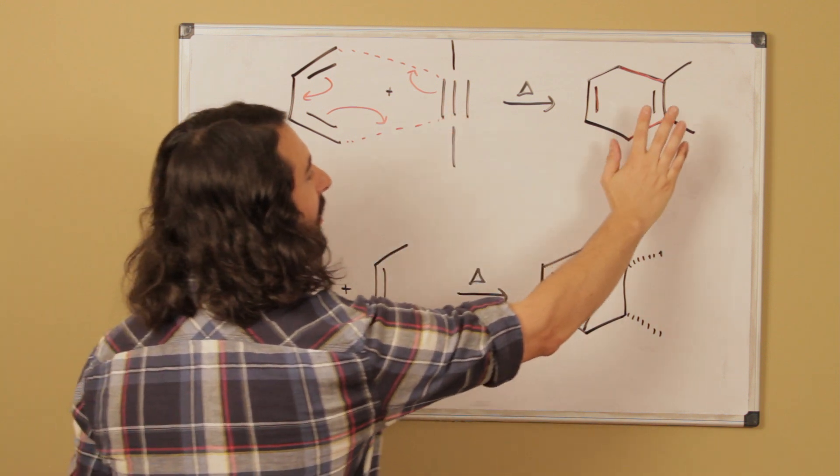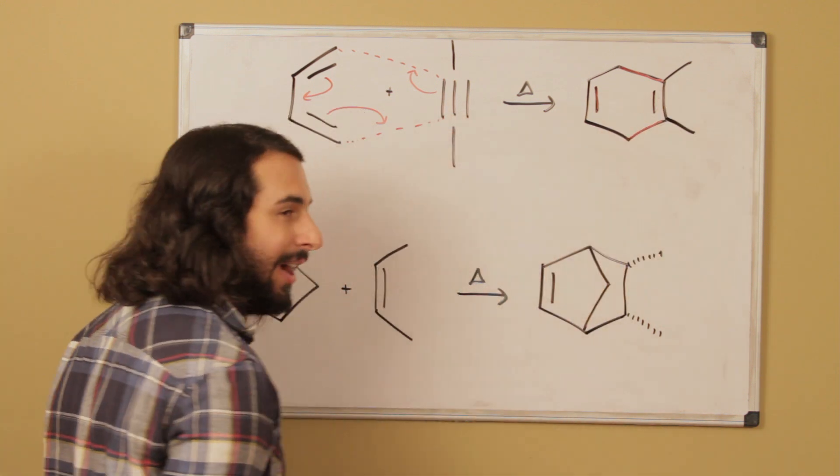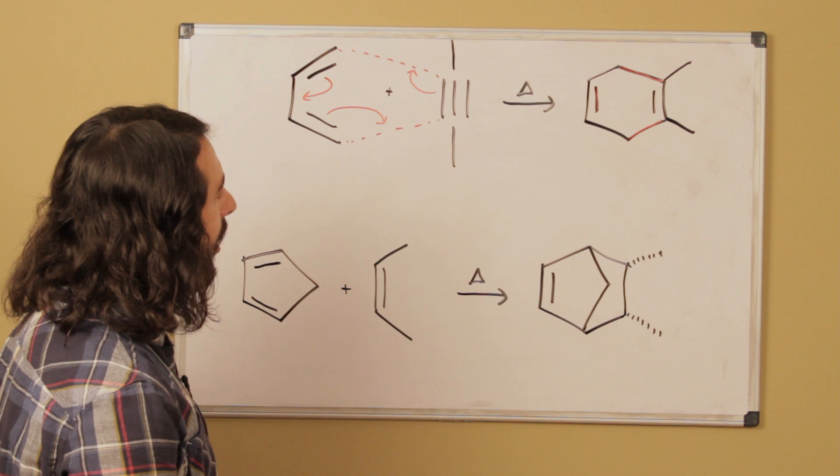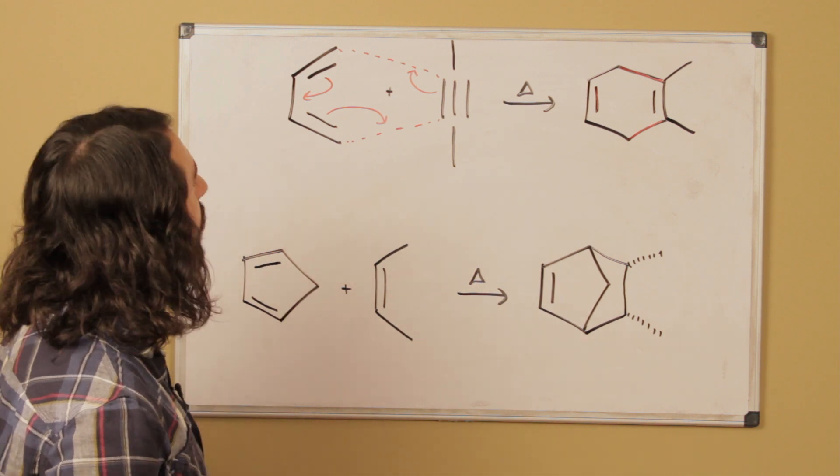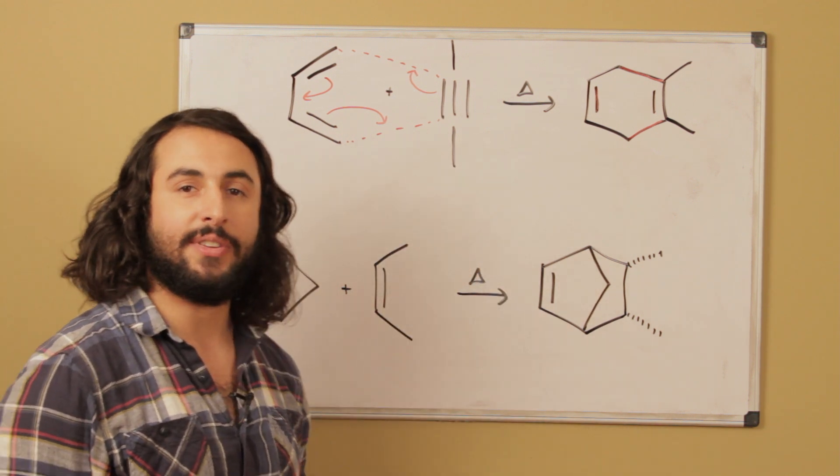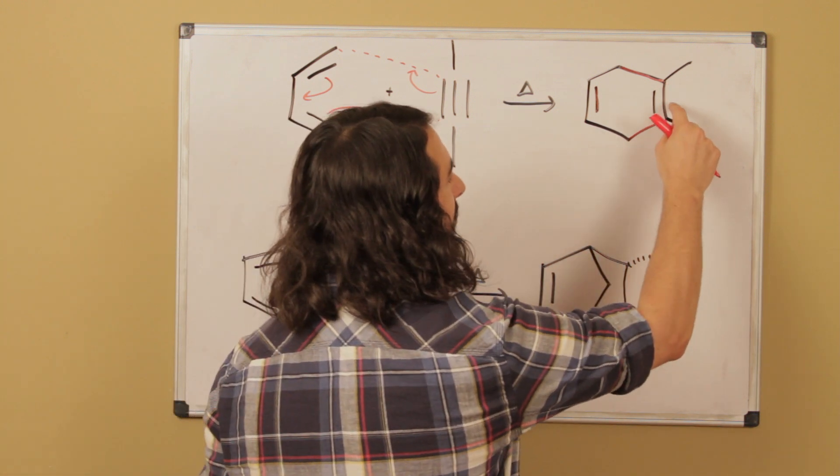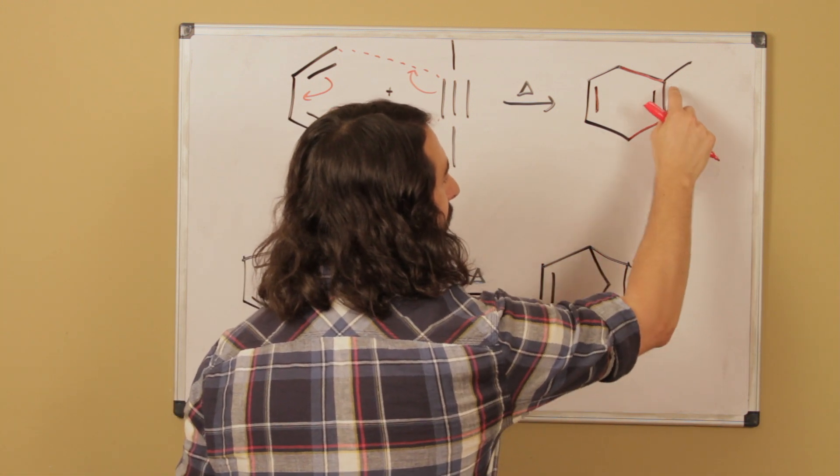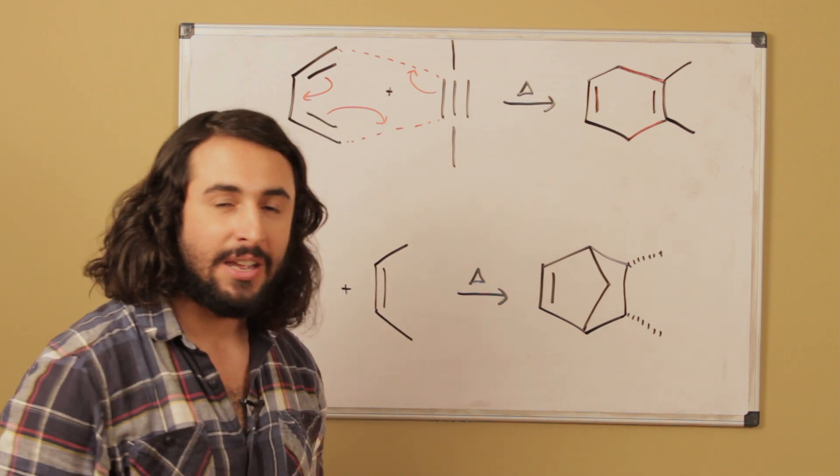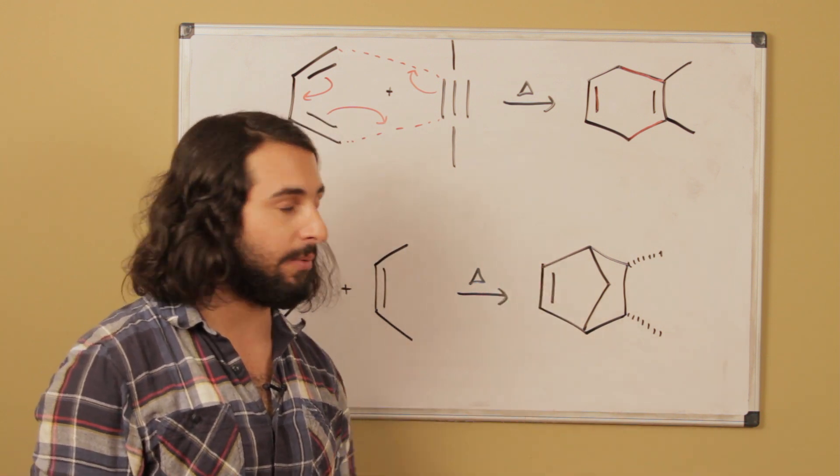If this had been an alkene like normal we would not see that pi bond there and that would be our product without that pi bond there. But since it was an alkyne we do have an additional pi bond. These are now sp2 trigonal planar so those methyls are flat and in plane. So that's the correct Diels-Alder product for that reaction.